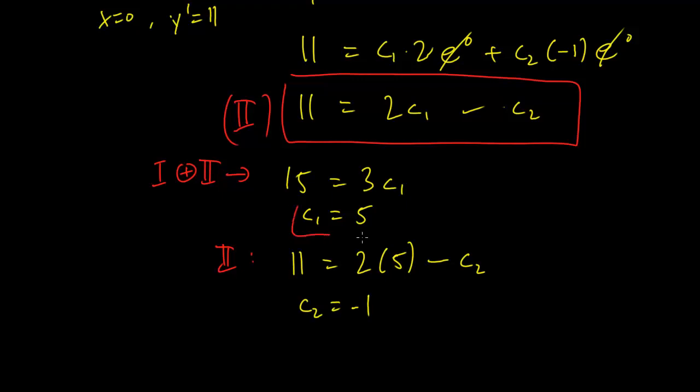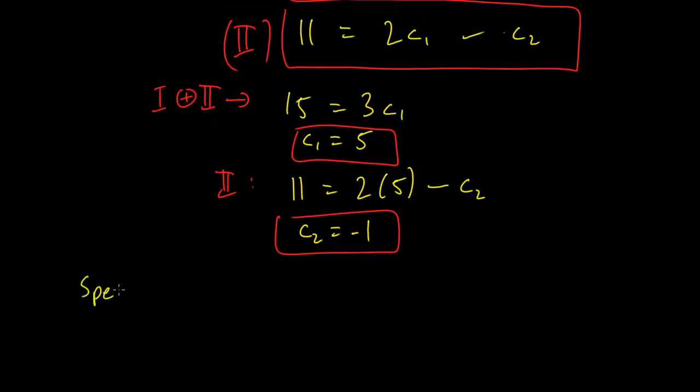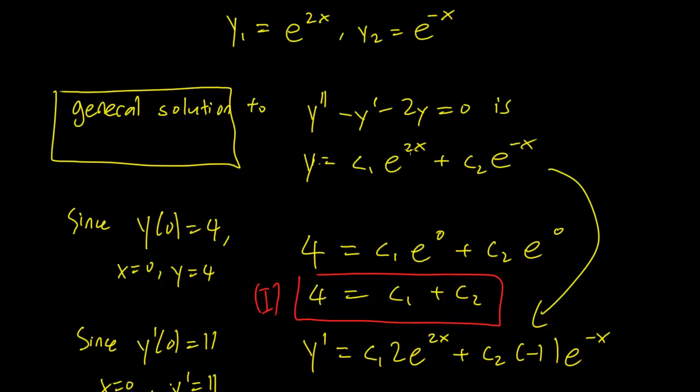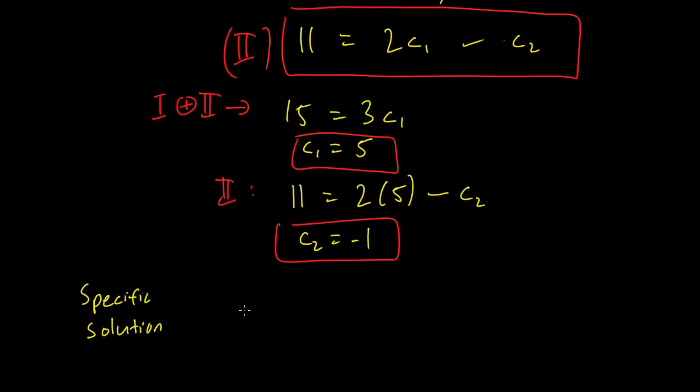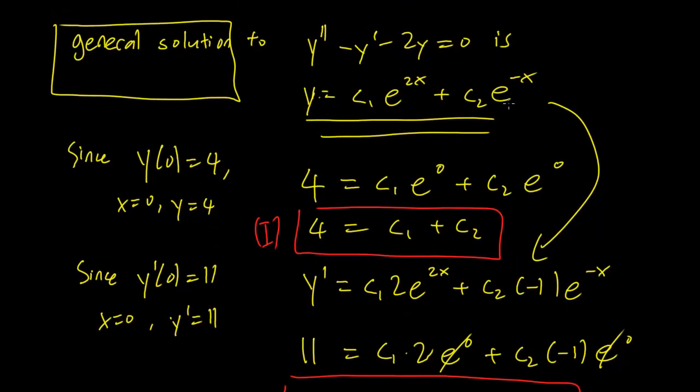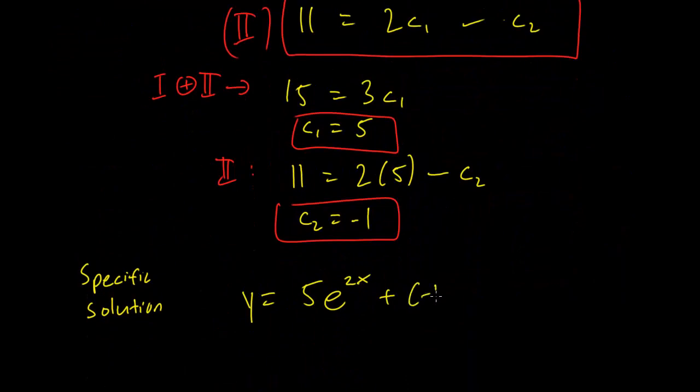So we have our solution here. Our solution is going to be c1 equals 5, c2 equals minus 1. And thus our specific solution, we are going to take the general solution here. Our general solution was c1 e^(2x) plus c2 e^(-x). So we simply have y equals 5 e^(2x) plus minus 1 e^(-x). And that is our specific solution for our problem given that initial data.